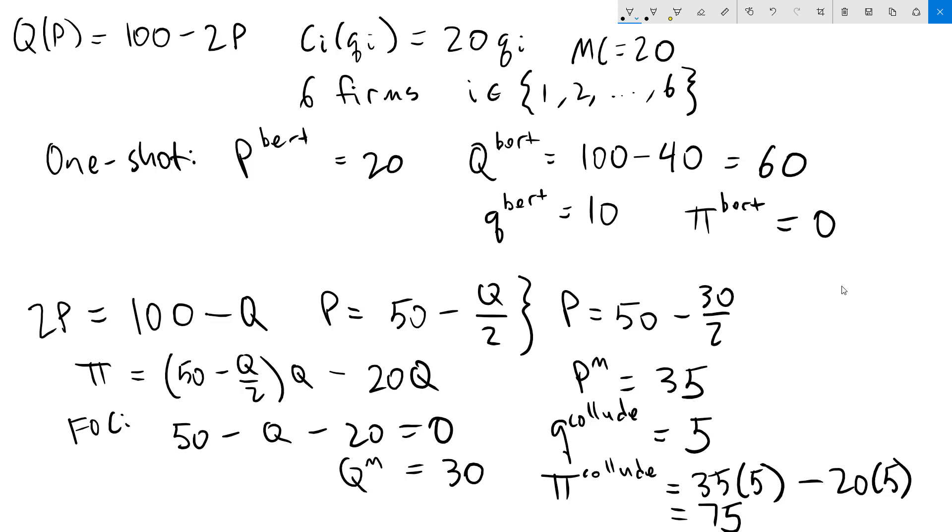To take the entire market, a single firm could slightly undercut 35 and sell to the entire market of 30 at that point. If you want to say that it's something like 34.99, you can. I typically just call it close enough to 35. That's going to give us a defection profit of 35 times 30 minus 20 times 30. We're selling to the entire market of 30 for a price just a tiny amount under 35, so it's negligibly close, basically. And that's going to give us a profit of 450.